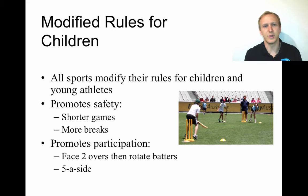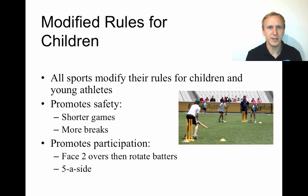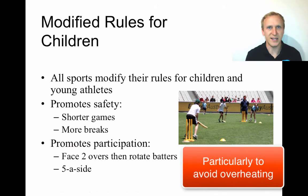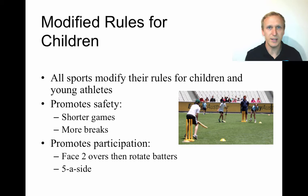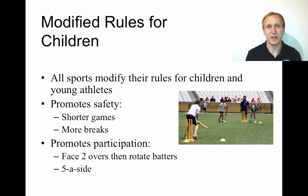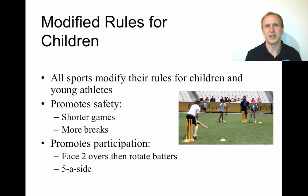Those rules then get modified for children. All sports essentially change their rules for young athletes, both to promote safety and to further encourage participation. To promote safety, children have shorter games, more breaks, and softer equipment. In cricket, Kanga cricket uses plastic stumps, plastic bats, and squishy plastic balls. The rules also promote participation — everyone rotates, everyone gets a bowl, everyone gets to bat for a certain number of overs, giving everyone a go and making sure they're having fun.